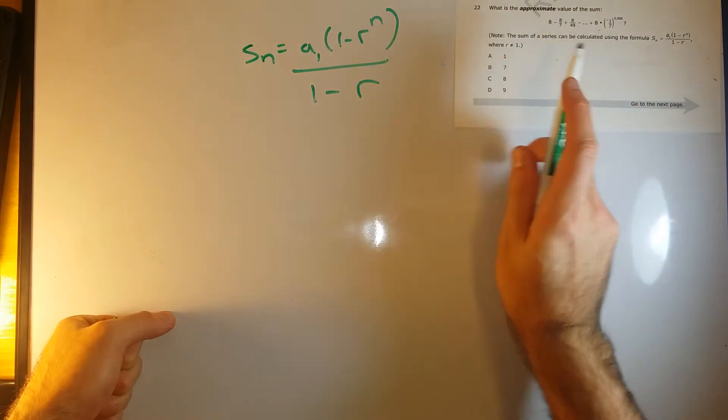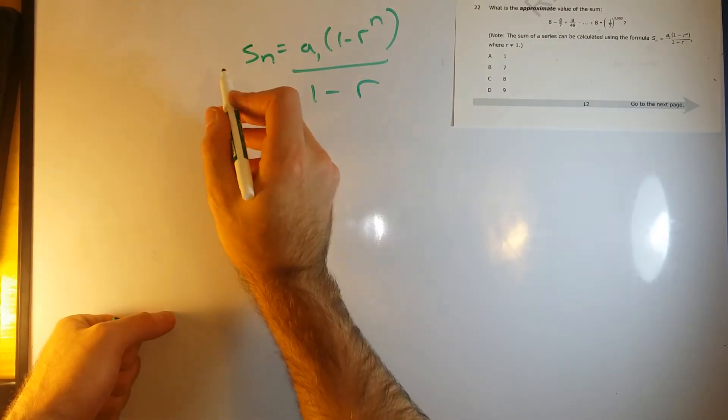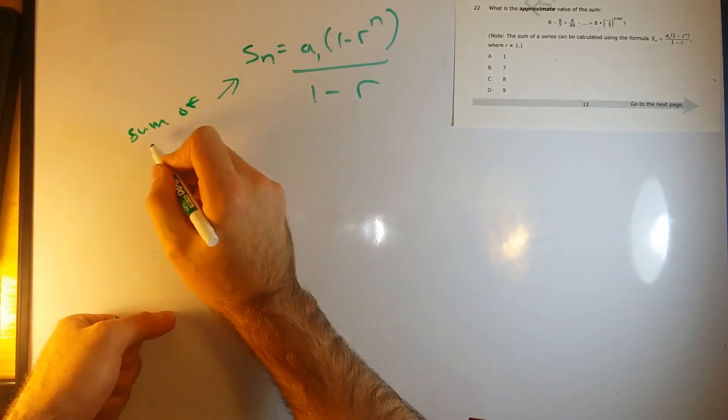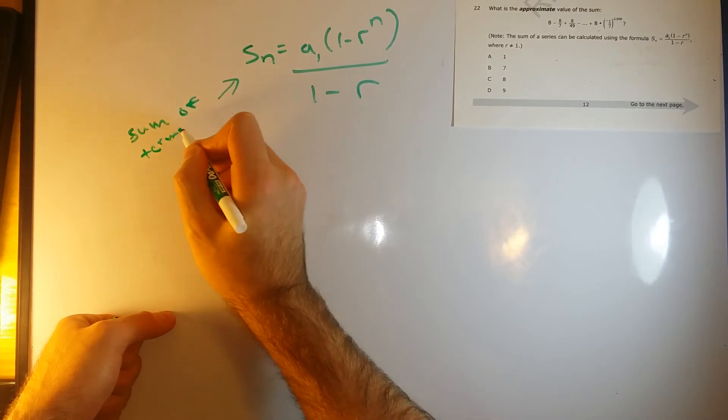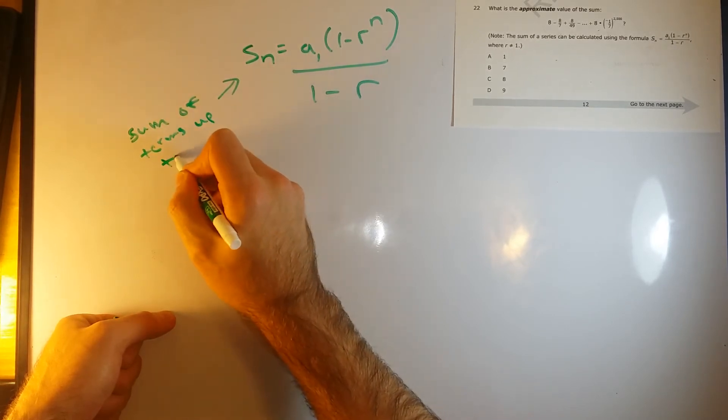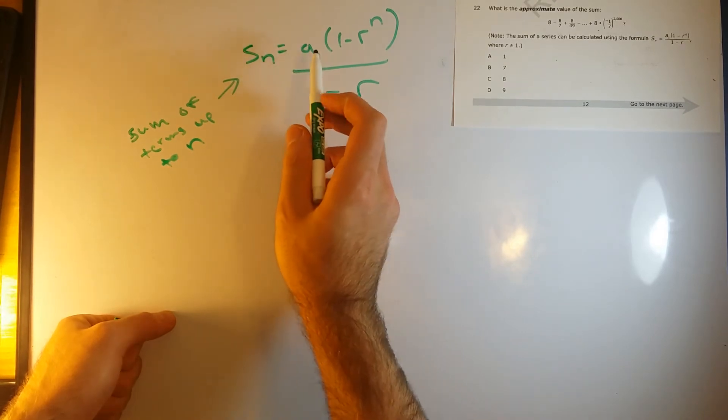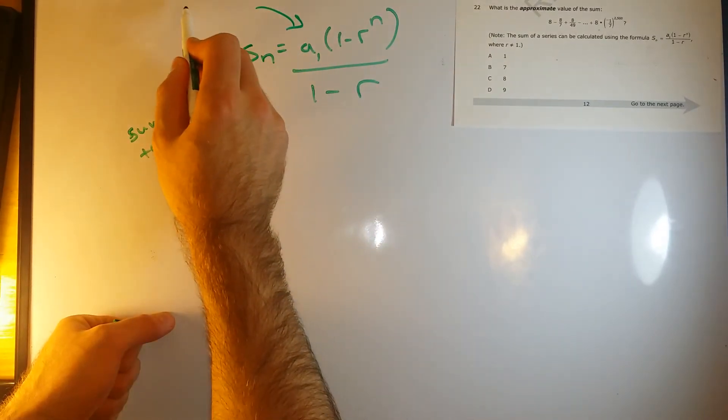Because it's saying S sub N. So S sub N, this means the sum of terms up to N. A sub 1, this is saying the first term. So this is the first term.